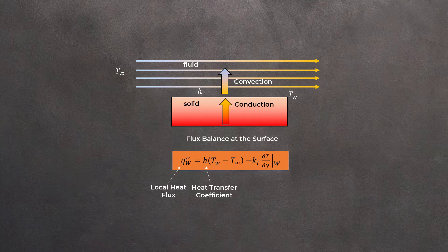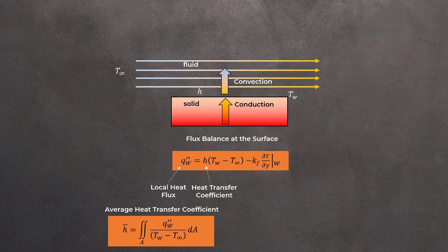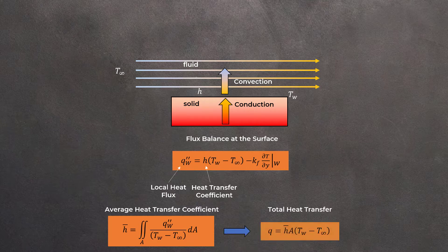For engineering estimates, however, the average value of heat transfer coefficient can be defined as shown here. Subsequently, the total heat transfer rate is defined by the following relation.